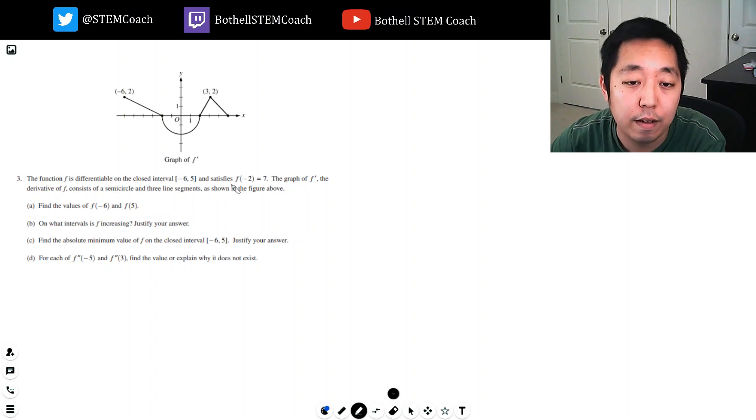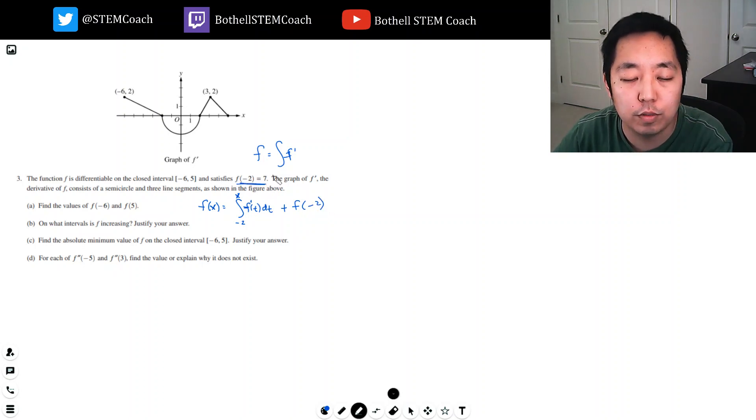The relationship between f and f prime is that f is the anti-derivative of the derivative. Like the fundamental theorem of calculus, I'm gonna do the anti-derivative of that. The way you would want to do something like this is f of x equals the integral from, I'm gonna write up to x, f prime of t dt, and then I have to decide what am I gonna put down here. I'm gonna do negative two because you're given the initial value at negative two.